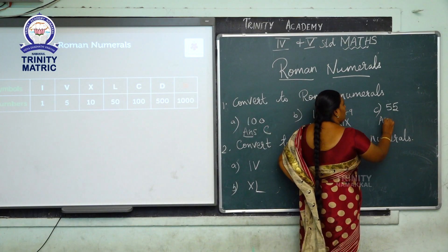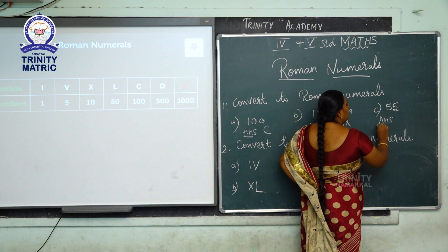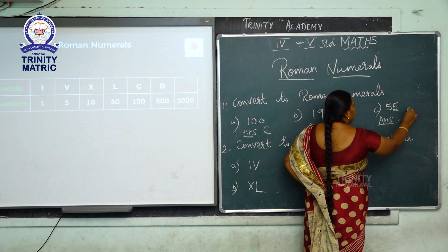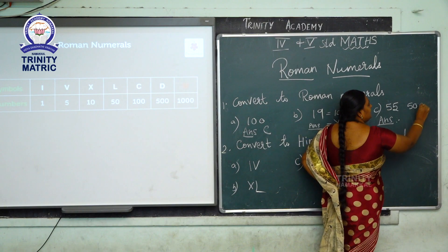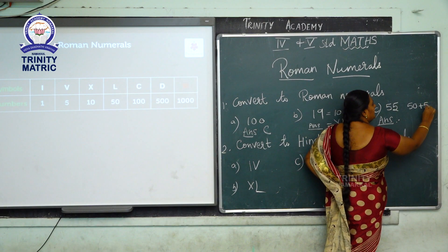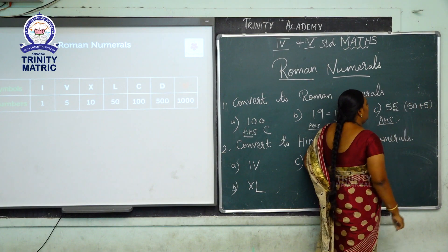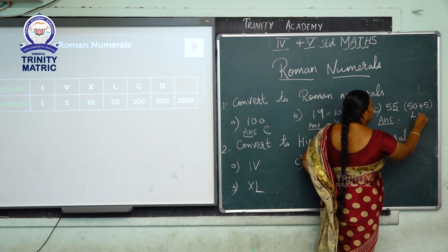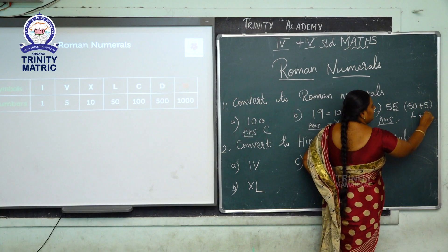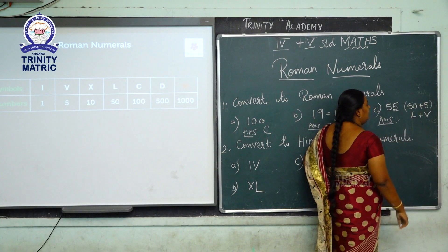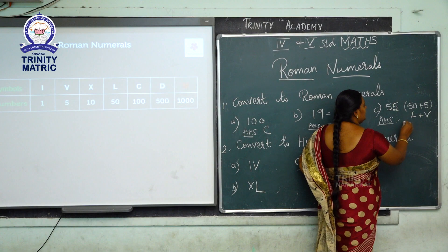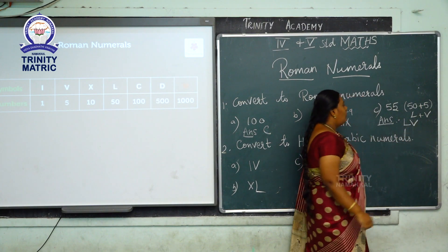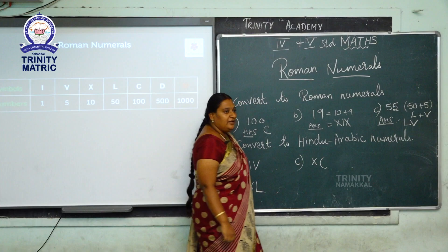Next: write the Roman numeral for 55. Split like this: 50 plus 5. What is the Roman numeral for 50? That is L. What is the Roman numeral for 5? That is V. So L plus V — the answer is LV. This is the Roman numeral for 55.